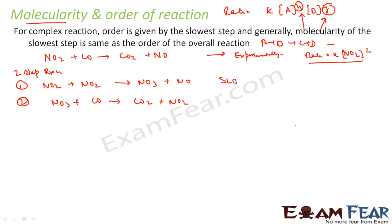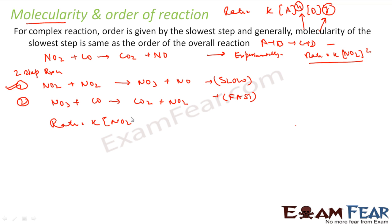The first step is slow and the second step is fast. The slow step is the rate-determining step. In reaction one, if you see directly, there are two NO2 molecules. So using the concept of molecularity, we can say the rate = k[NO2]^2, because there are two NO2 molecules in the slowest step.